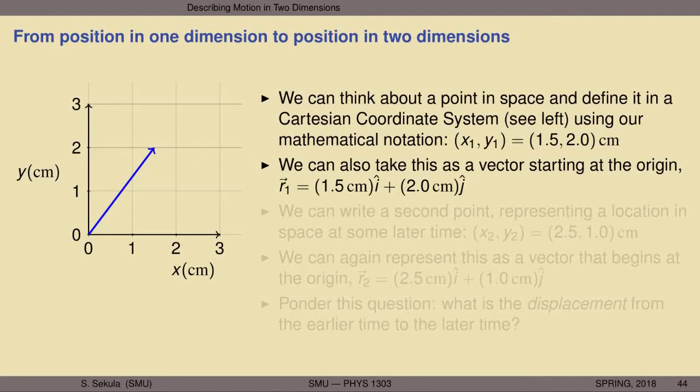In vector notation, this is a vector that has a horizontal component of length 1.5 centimeters pointing in the positive x direction, denoted by i-hat, and a length of 2 centimeters in the vertical direction, denoted by j-hat.